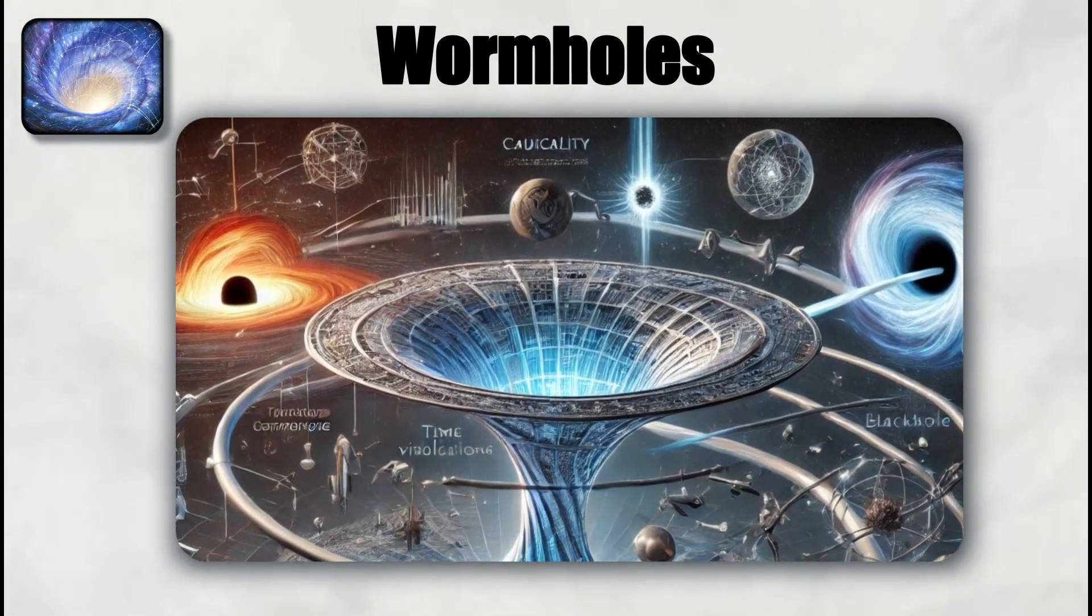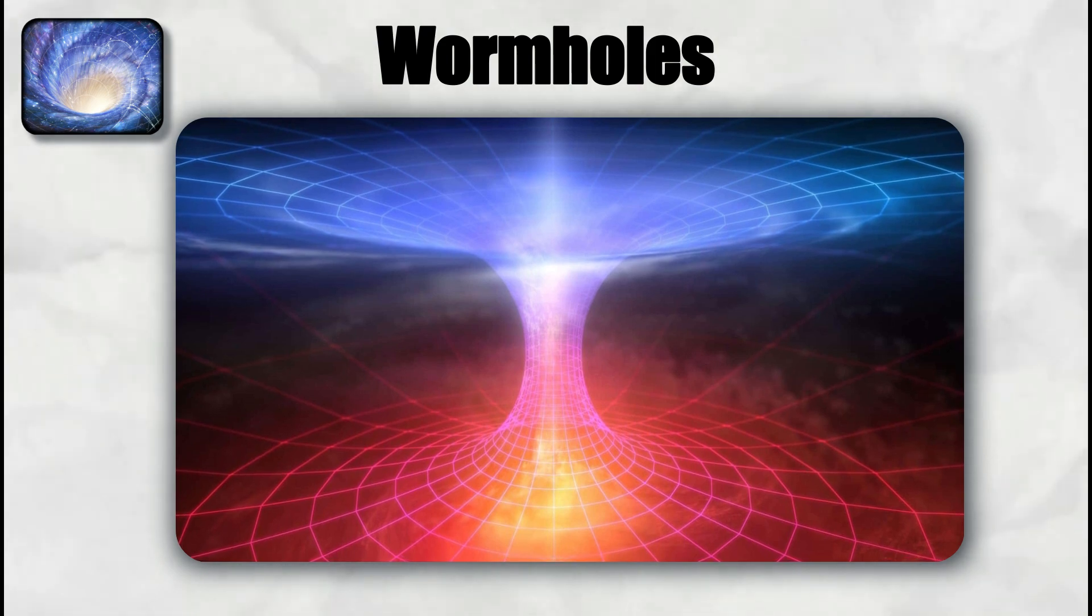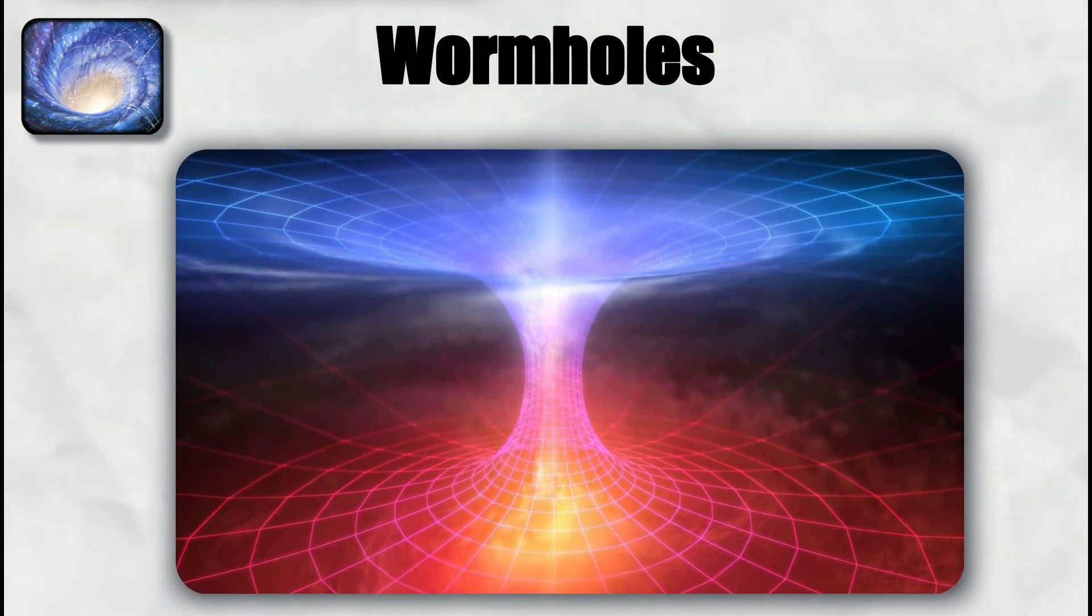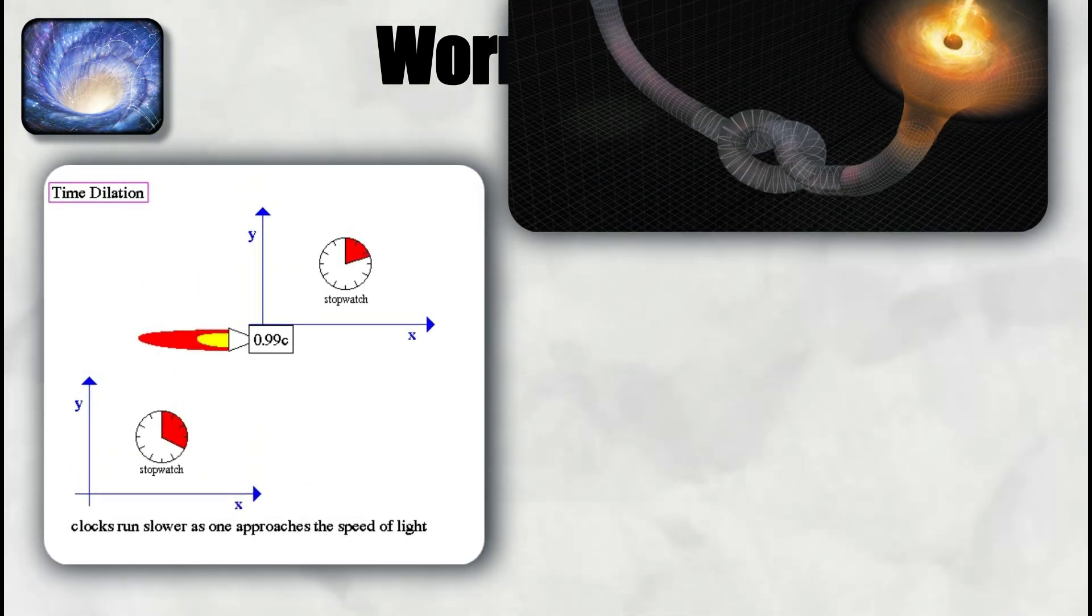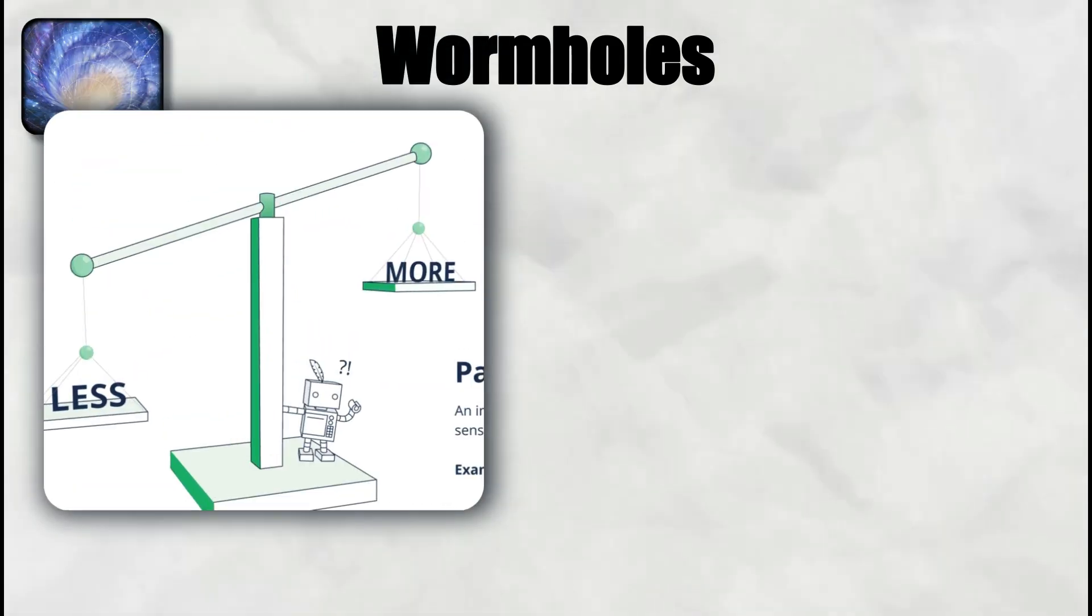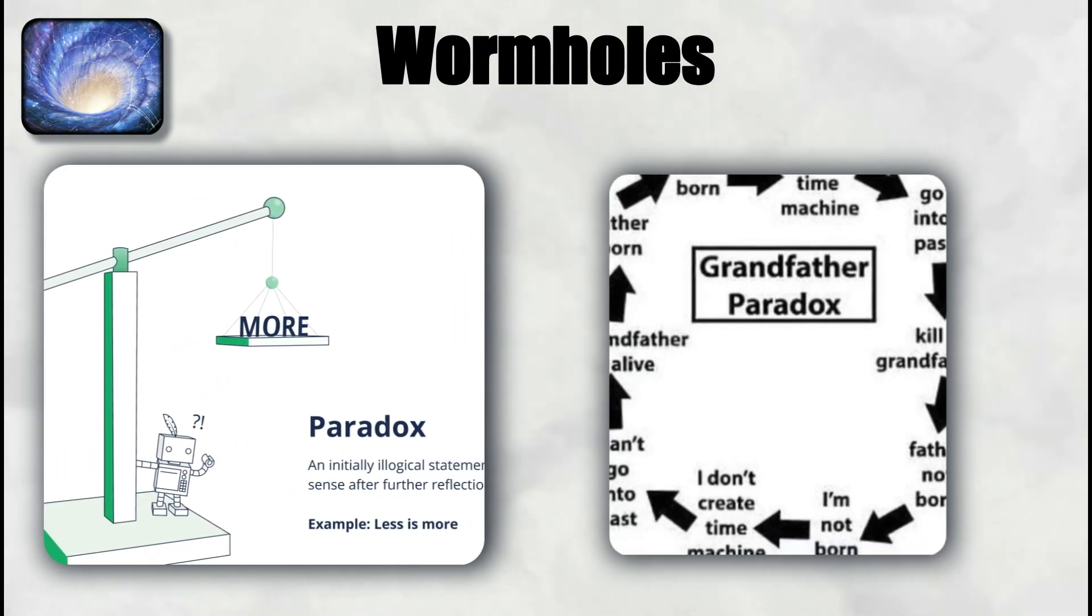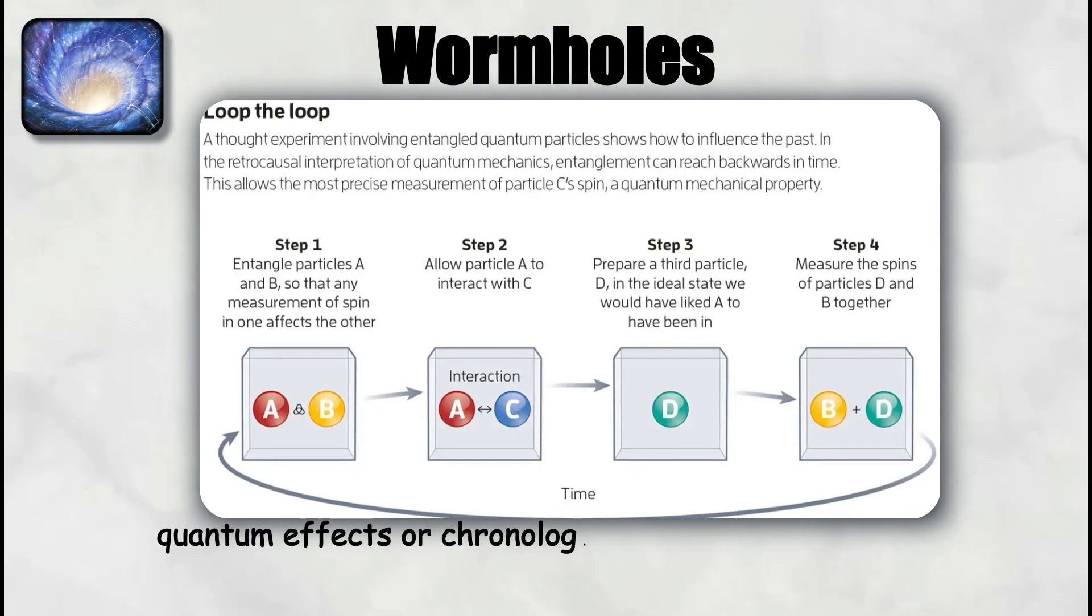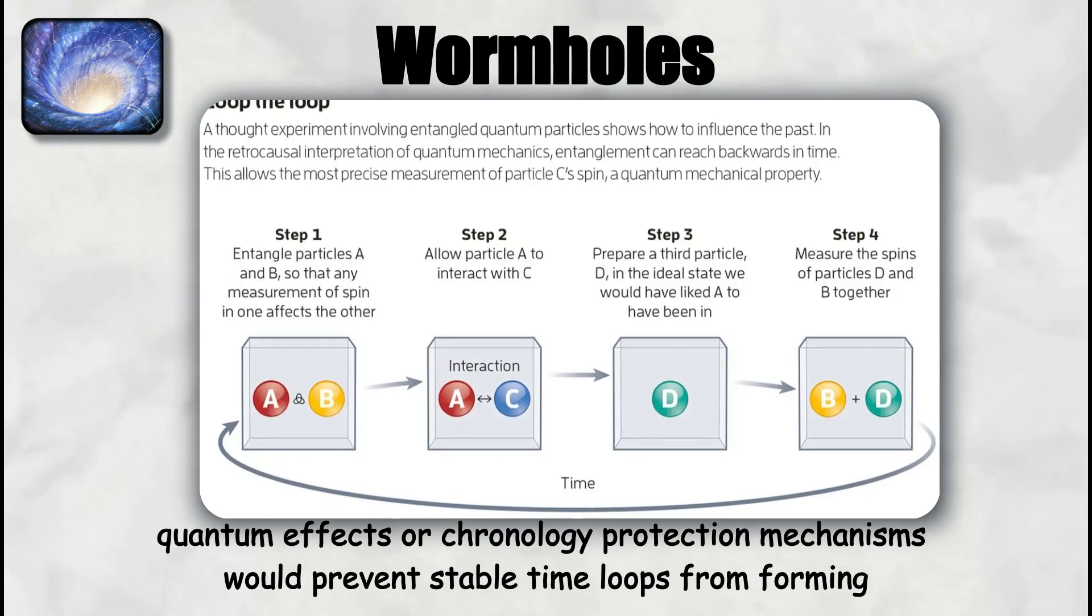Causality is another difficulty. A wormhole that connects two points can also act as a time machine if one mouth is accelerated relative to the other. Time dilation shifts the clocks at the two mouths, so moving through the wormhole could deliver an object to its own past. This raises paradoxes such as the grandfather paradox, where consistency of history is called into question. Some physicists argue that quantum effects or chronology protection mechanisms would prevent stable time loops from forming.